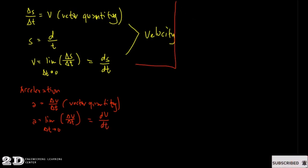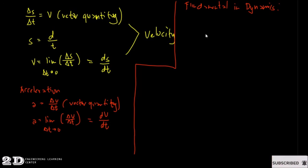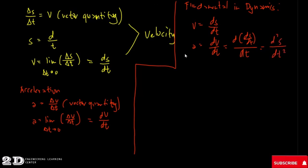We now have two of the three fundamental equations in dynamics. These equations are all differential. The first: velocity equals dS/dt — the instantaneous change in displacement per unit time. The second: acceleration equals dV/dt. We can also write acceleration as the second derivative of S with respect to t, that is d²S/dt².